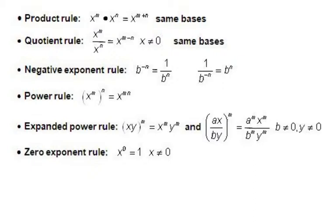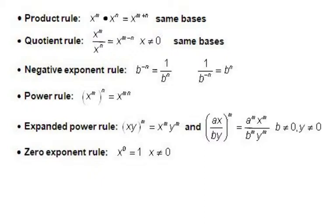We also need to know our exponent rules. If you're multiplying two terms with the same base, you add the exponents. If you're dividing two terms with the same base, you subtract them. If you have a negative exponent, move it from the top of the fraction to the bottom or vice versa. A power raised to a power means you multiply those exponents. If you have an exponent outside parentheses, distribute it to each part. Anything raised to the zero exponent is always one.